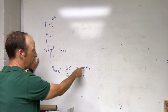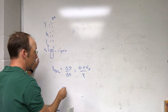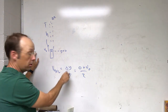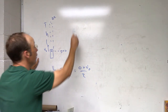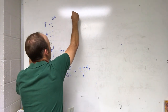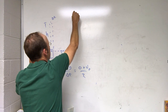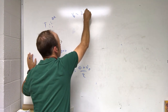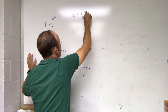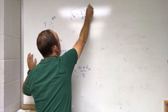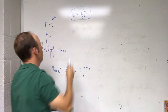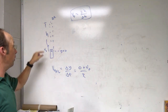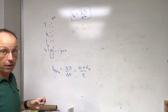Since the final velocity is zero, average velocity equals v0 divided by 2. So if I measure the height h and the time delta-t to reach the top, I can solve: v0 equals 2h over delta-t. Measure the time to the highest point, measure the height, and I get the velocity.